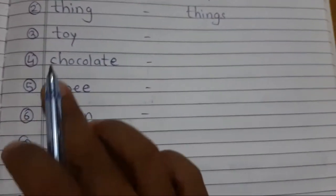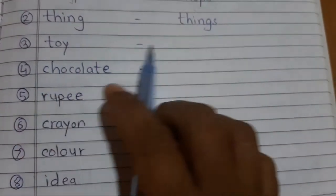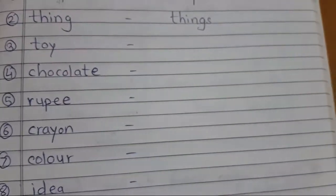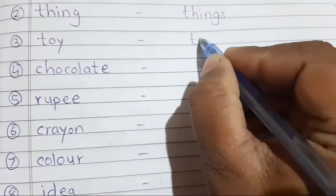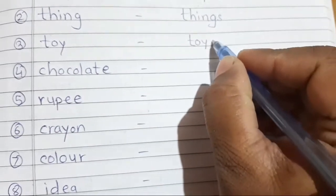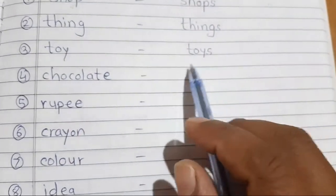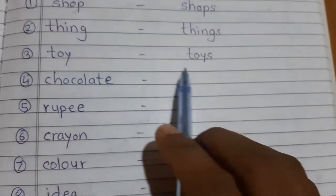T-O-Y, same spelling, but add S only. So toy, toys. Chocolate, chocolates.